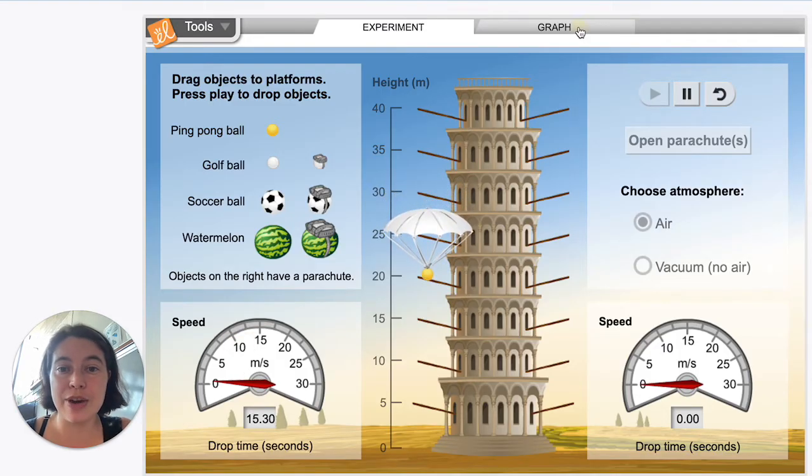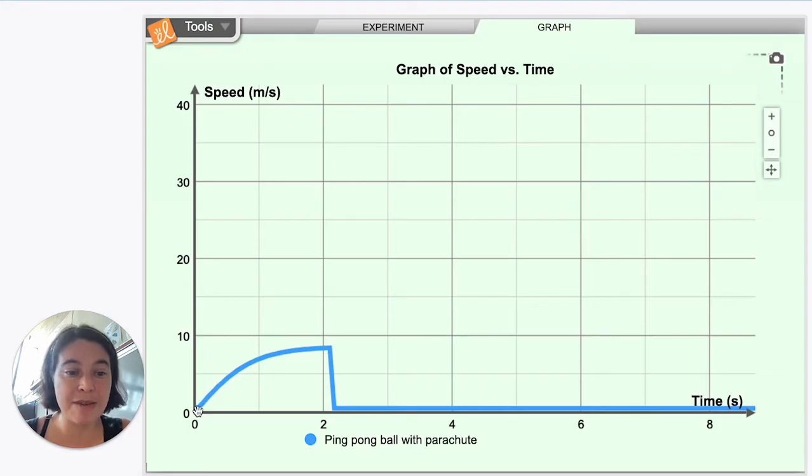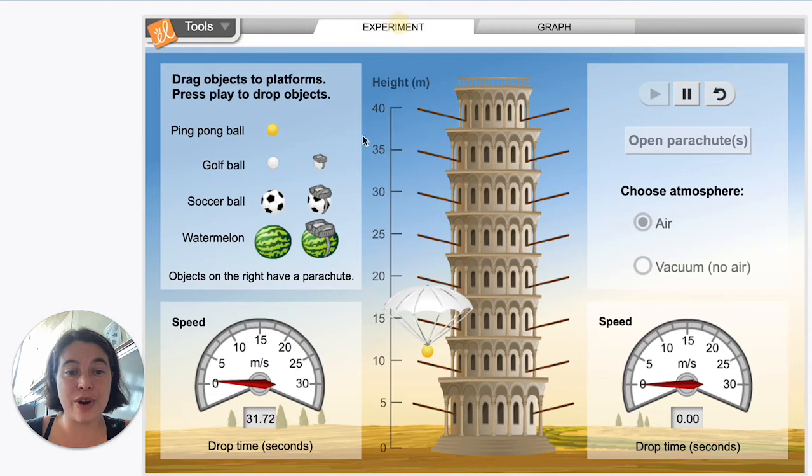It slowed down significantly. You can see it had been speeding up, and then we open that parachute, it reaches a new terminal velocity. And now its velocity has plummeted down to 0.55 meters per second.